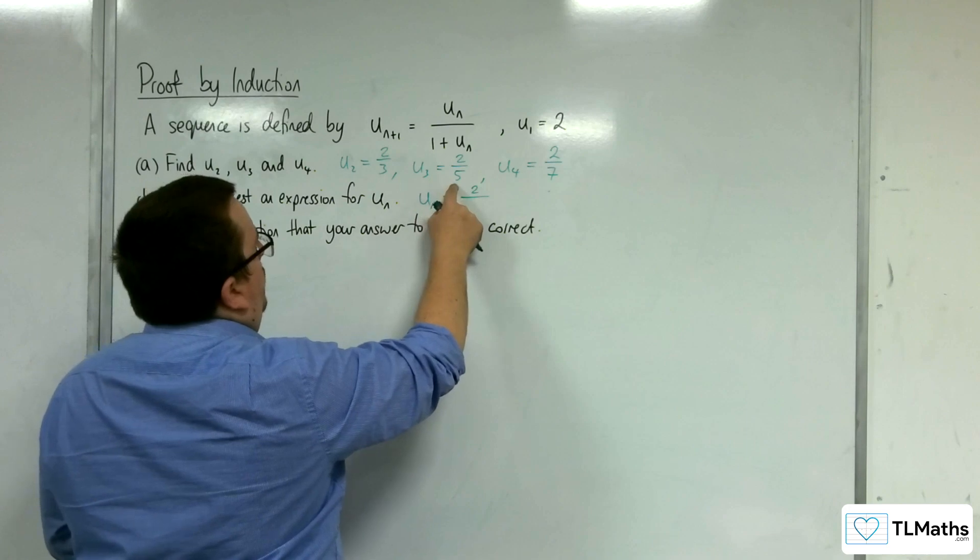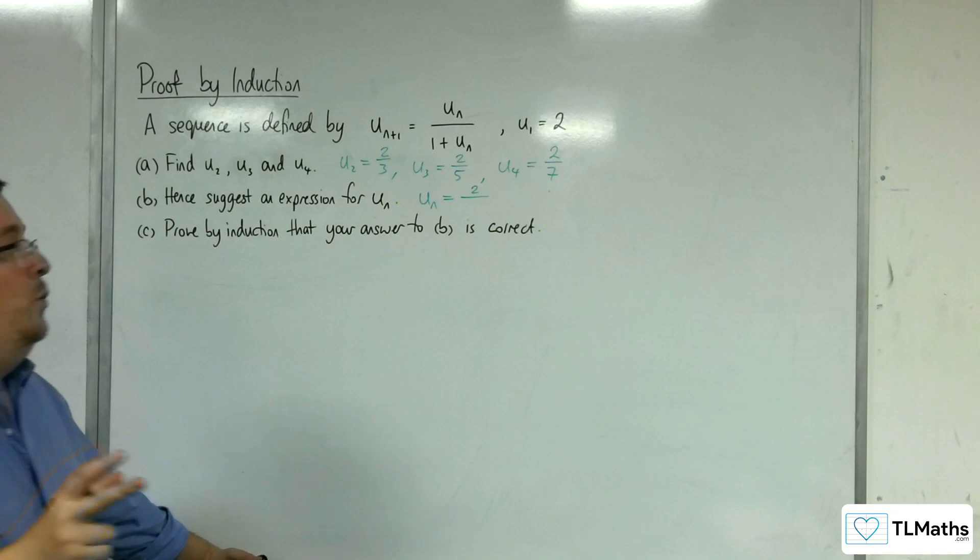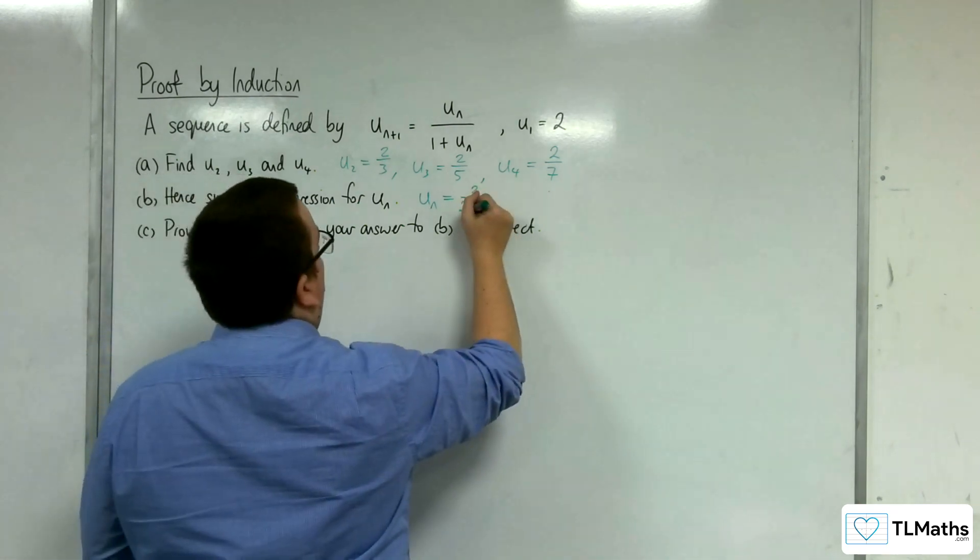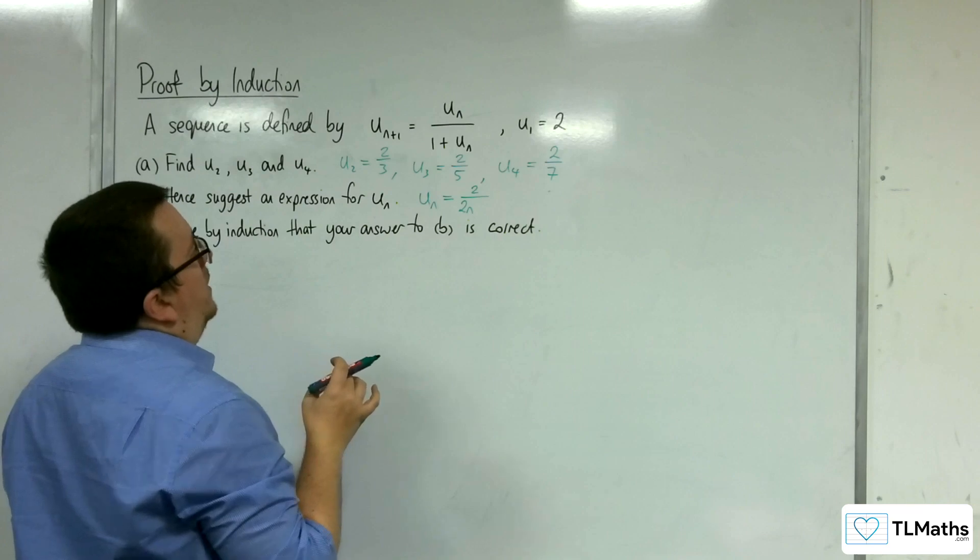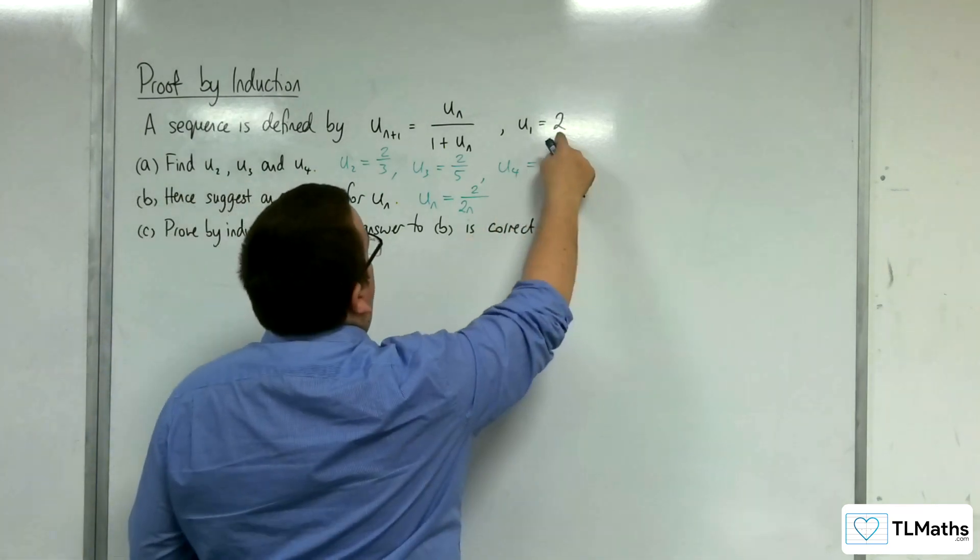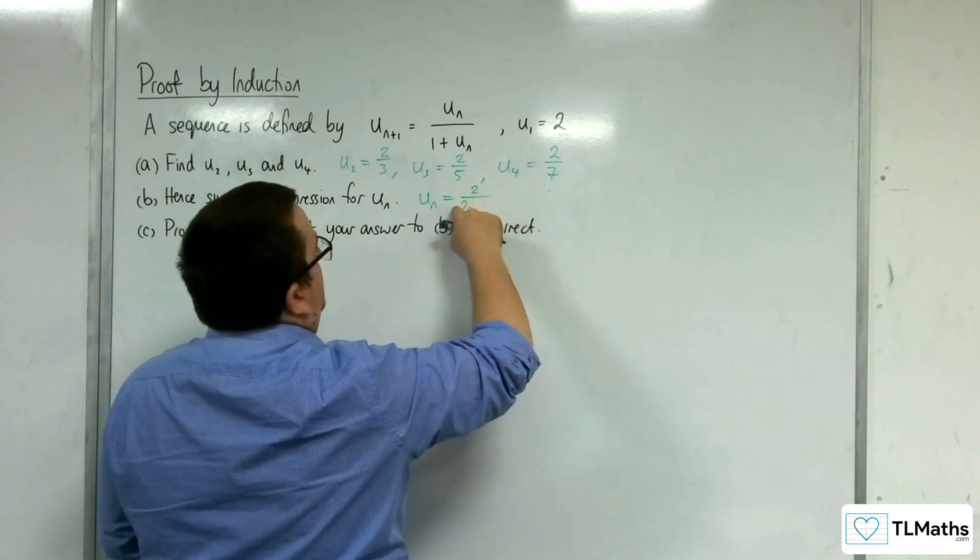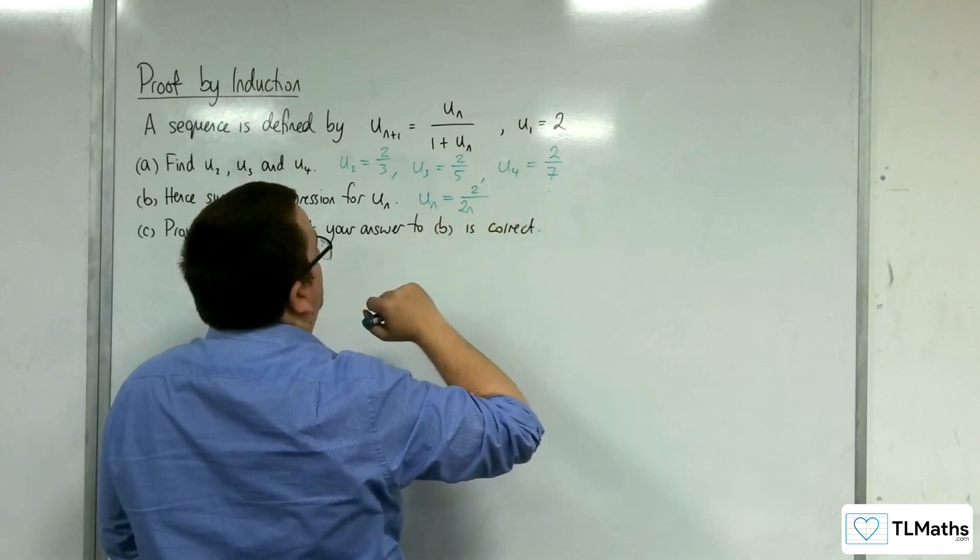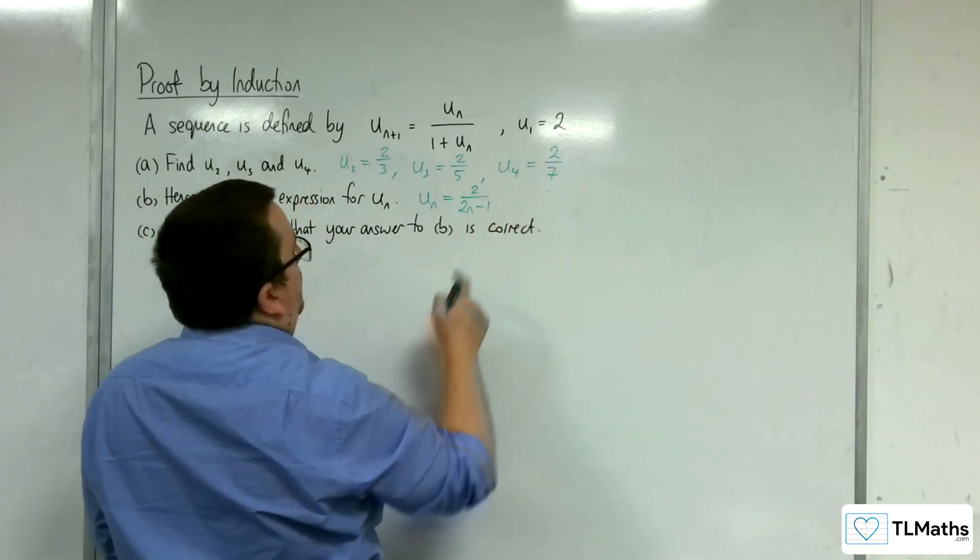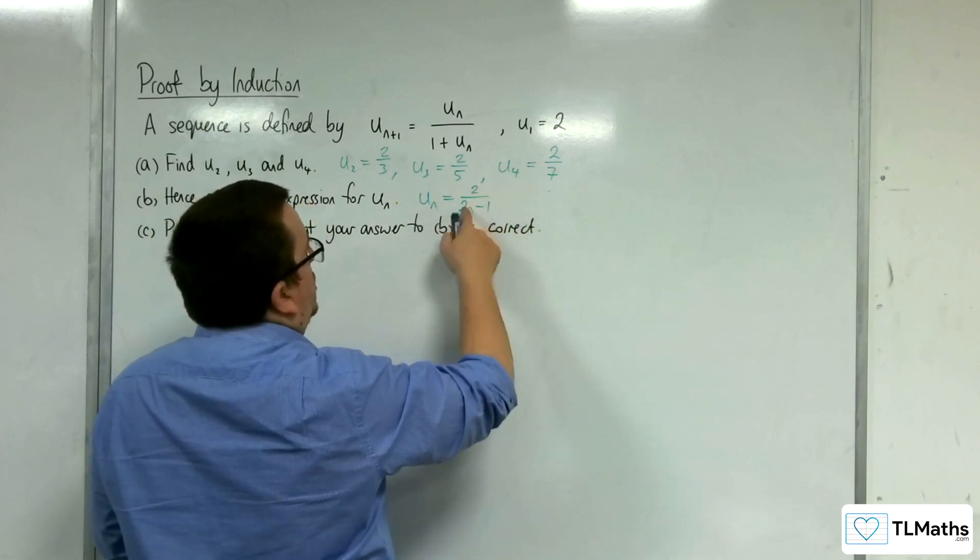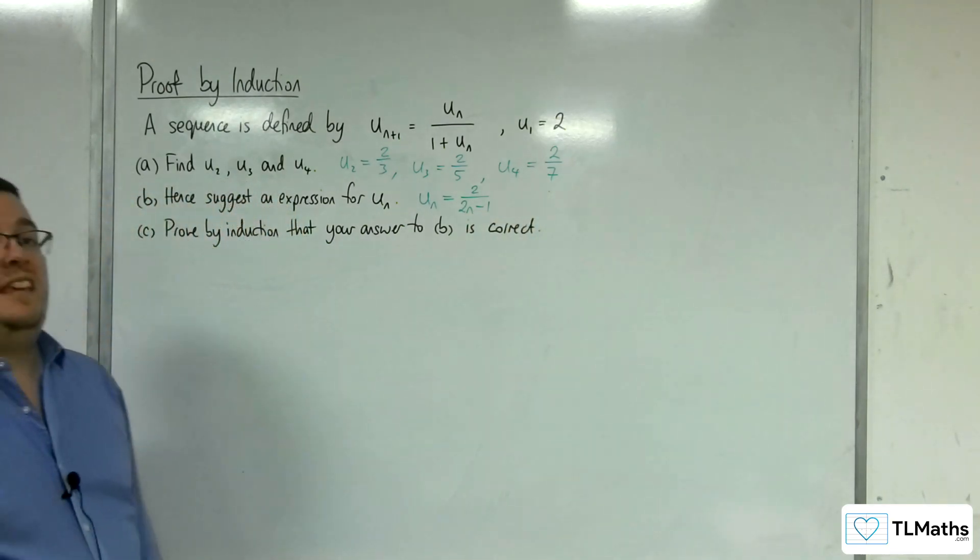And here we've got what appears to be an arithmetic sequence. We've got 2 as the difference between 3 and 5 and 7. So we've got 2n. And how do I get from 2 back to 1 for the denominator to be 1? That would be take away 1. So if we substitute a 4 into that, we get 2 over 8 take away 1, which gives me the 2 sevenths.